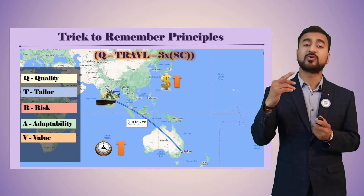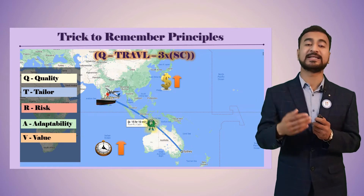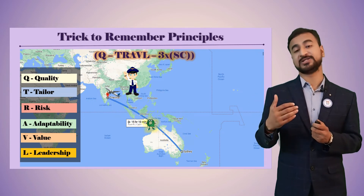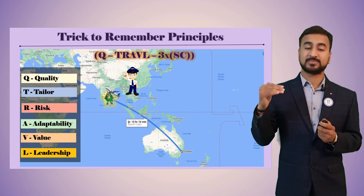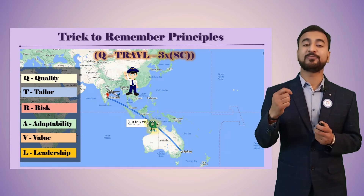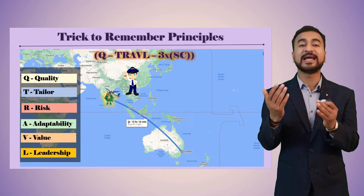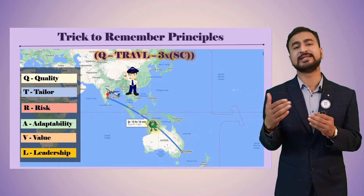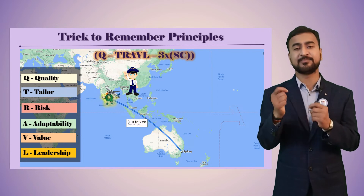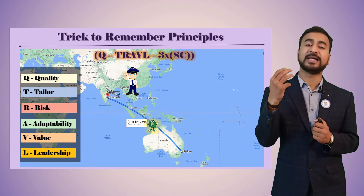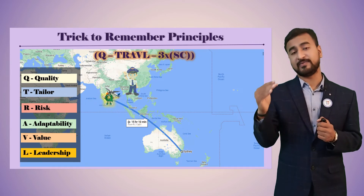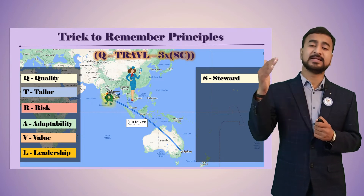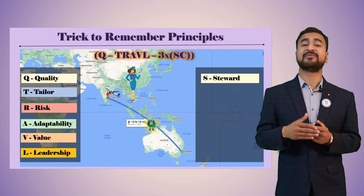The cost-benefit analysis he performs represents Value. Then, the flight is commanded by the pilot, who takes a Leadership role. Leadership here is not about authority — it can be situational leadership or servant leadership, which we will discuss in detail. The pilot flying the aircraft represents the leadership principle.